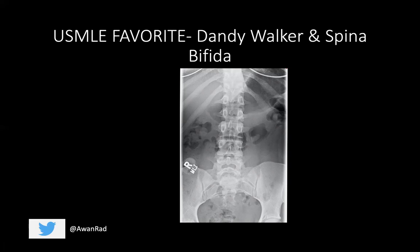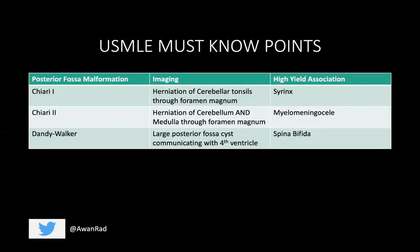Not only is spina bifida associated with Dandy-Walker, but you can also have heterotopias, neural tube defects, even cardiac anomalies, and cleft lip and cleft palate associated with Dandy-Walker malformation.